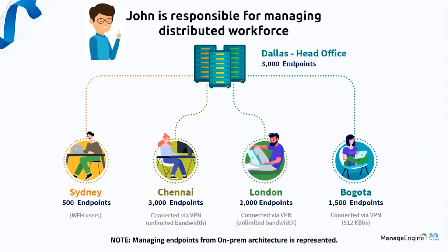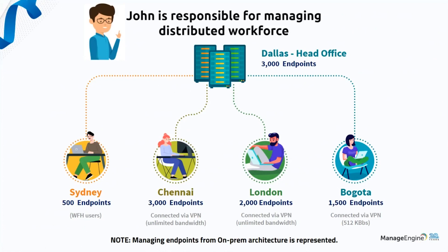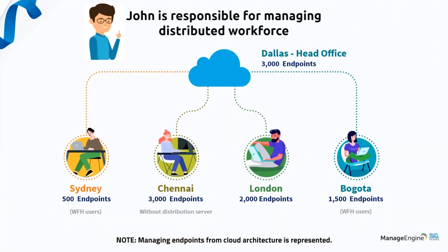This is a traditional example of a distributed workforce. John is an IT manager who needs to manage endpoints in different locations, all managed with different networks — connecting through VPN or the internet, with different bandwidth ranges. These are all managed under the head office in Dallas, where they also have some local endpoints, as well as endpoints in wide area networks. There's also a cloud environment with computers hosted in different locations, including AWS and other cloud environments.